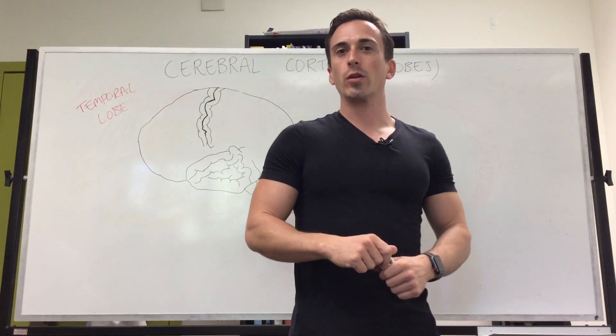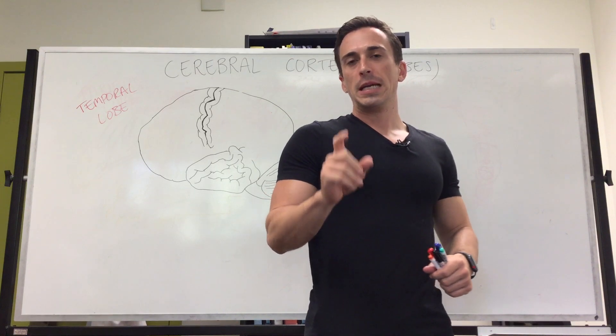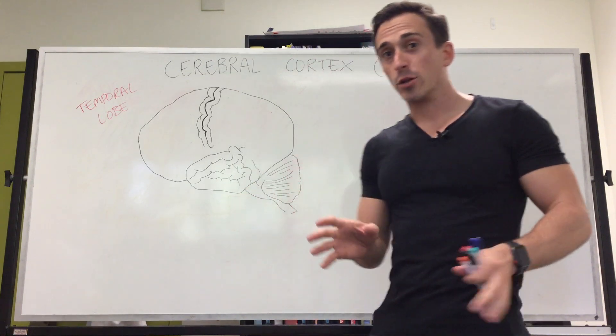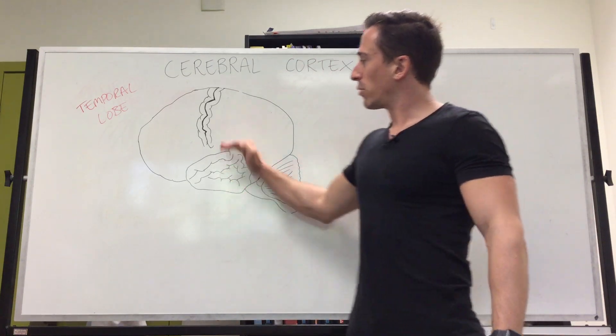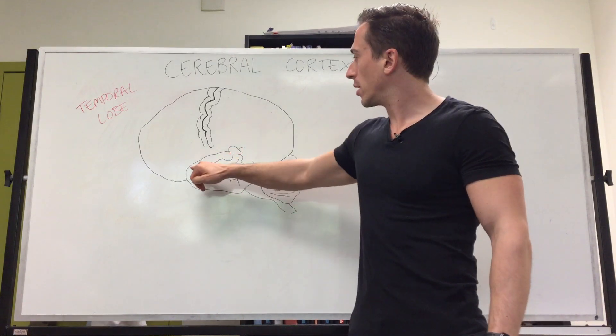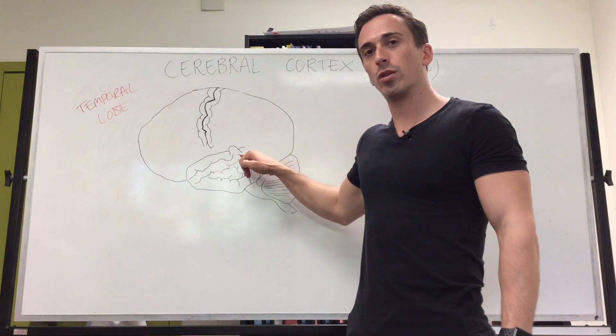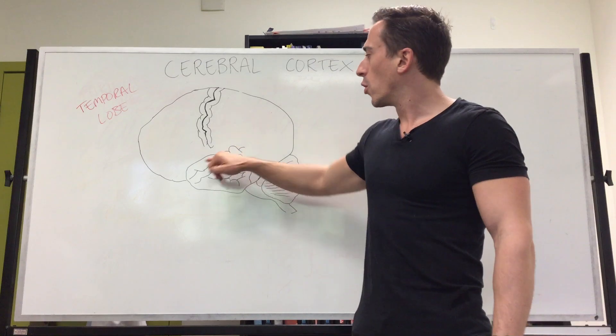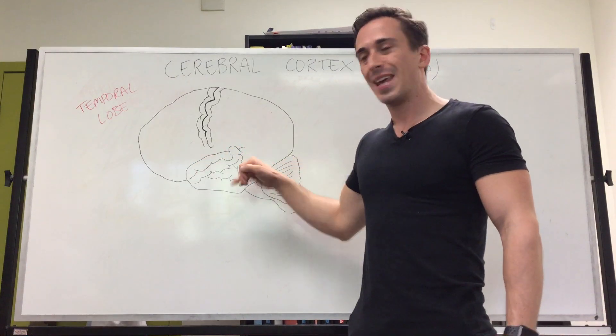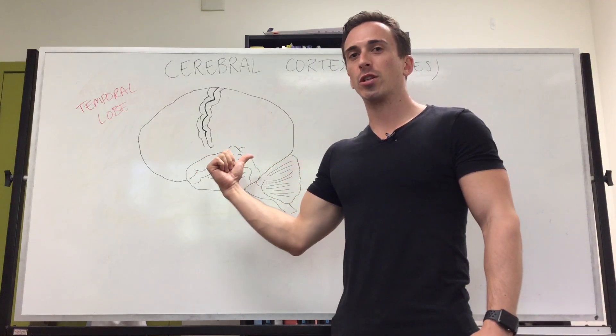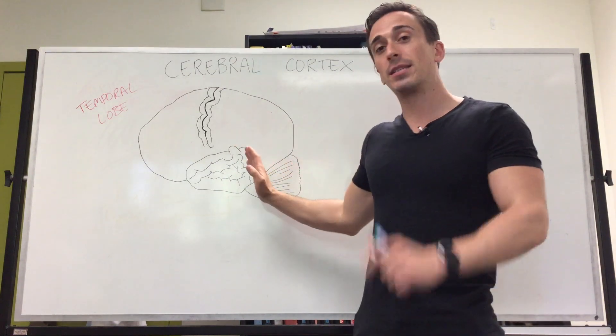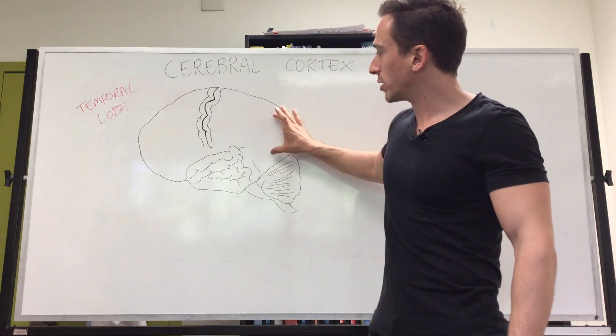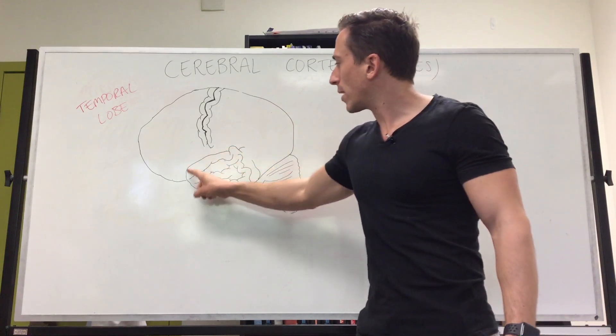In this video we're going to look at the temporal lobe. The temporal lobe's superior boundary is the lateral fissure, also known as the lateral sulcus or Sylvian fissure. Its posterior boundary is an imaginary line that separates the temporal lobe from the occipital lobe.